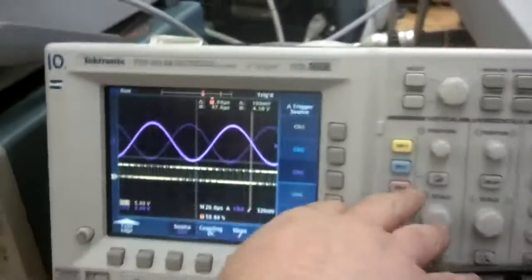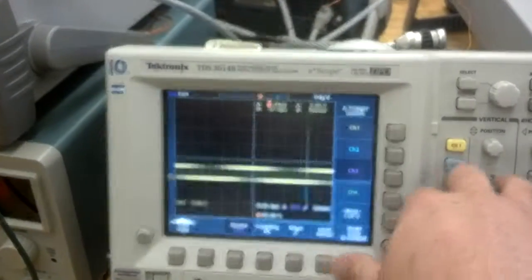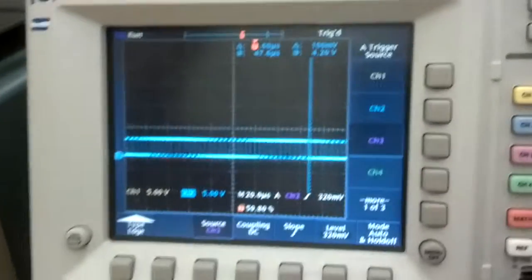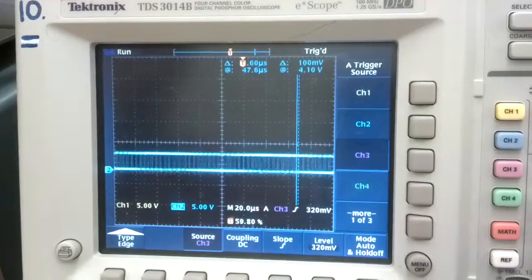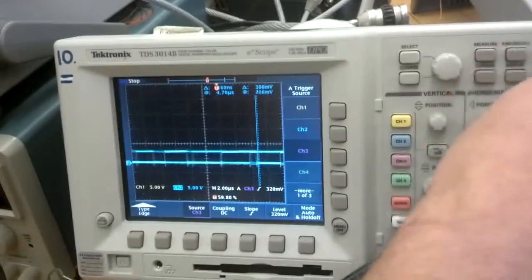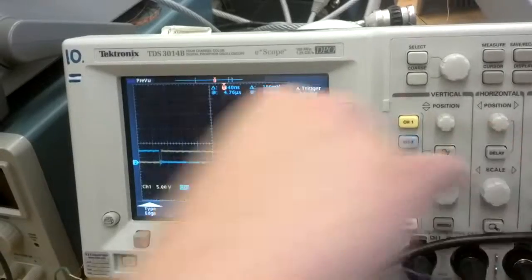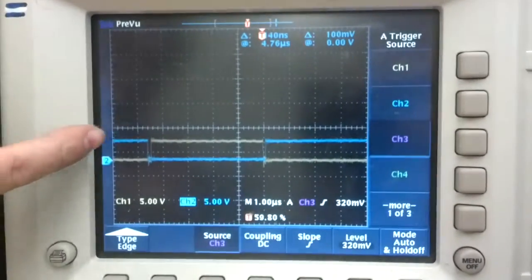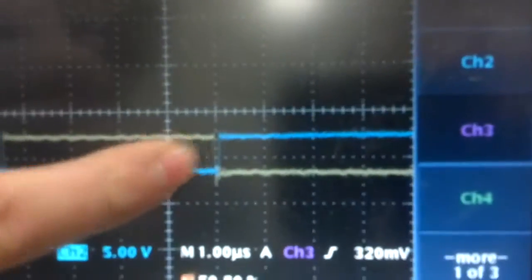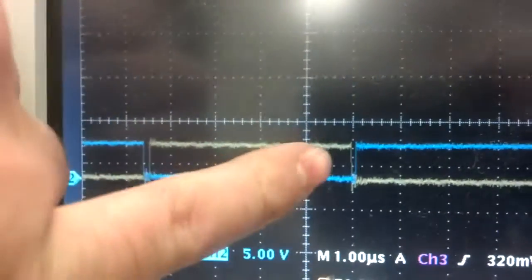Then, if we look at both of the outputs from our dead time circuitry together, you'll notice that in between each of our opposing waveforms there is a small gap. That gap is successful dead time generation and should prevent us from blowing our circuit up.